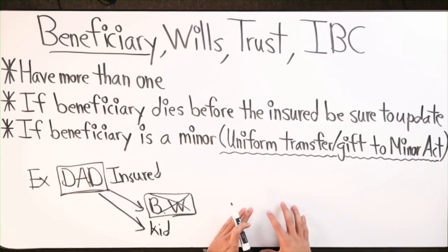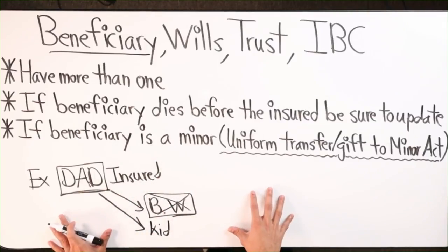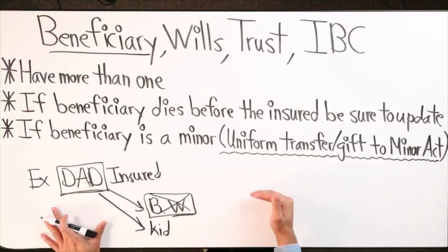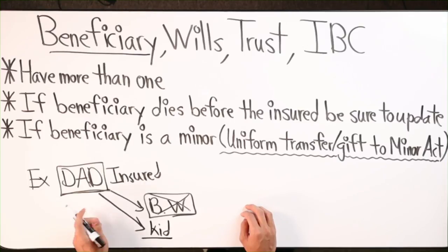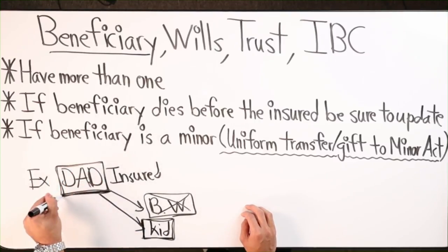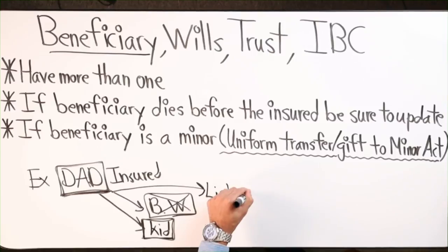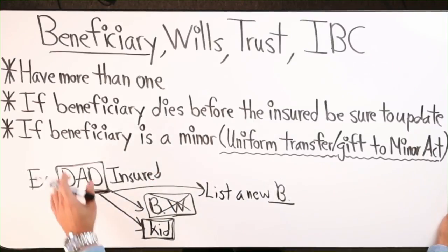If wife dies, obviously this will be a very tough time — you're mourning a death and that can be very tragic. This can be a hard topic to discuss, but you do want to be aware. Let's say dad's wife passes away and the kid is a minor — the kid will need a guardian. You're going to want to make sure that you update a new beneficiary. Be sure to do that.